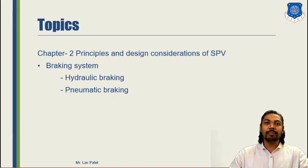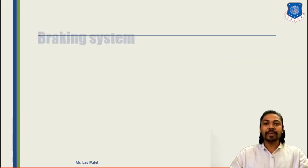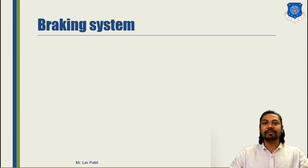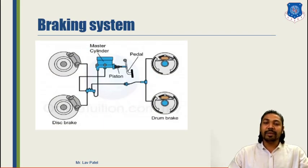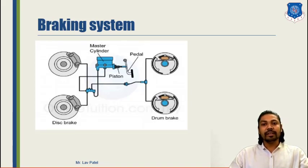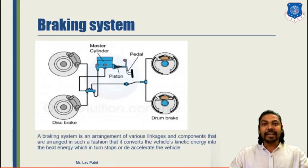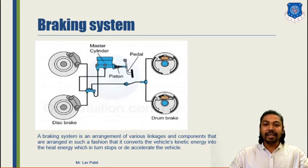The principles of braking system for individuals like two-wheelers, four-wheelers, and special purpose vehicles are the same. Similar to cars, we are using the same kind of braking or hydraulic system. The braking system is an arrangement of various linkages — like master cylinder, hollow tubes, pedal, booster mechanism, and caliper — arranged in such a fashion that it converts the vehicle's kinetic energy into heat energy.